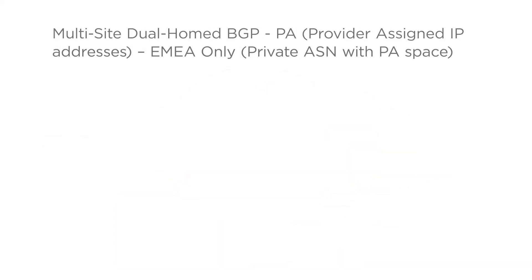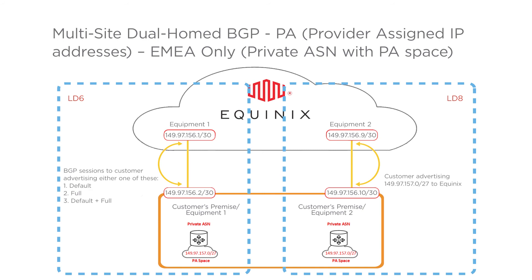Multi-site dual-homed BGP, PA — provider-assigned IP addresses, EMEA only — private ASN with PA space. Here the customer needs the assignment from Equinix for both private ASN and PA space, and the customer takes a dual-home service split across two sites. Equinix provides two IPv4 /30s or two IPv6 /126s for configuration, free of charge. BGP policy is used to select default routes, full routes, or default plus full routes. Getting additional IP addresses from Equinix becomes mandatory — IPv4 choices are /29, /28, or /27; IPv6 choices are /64 or /48.